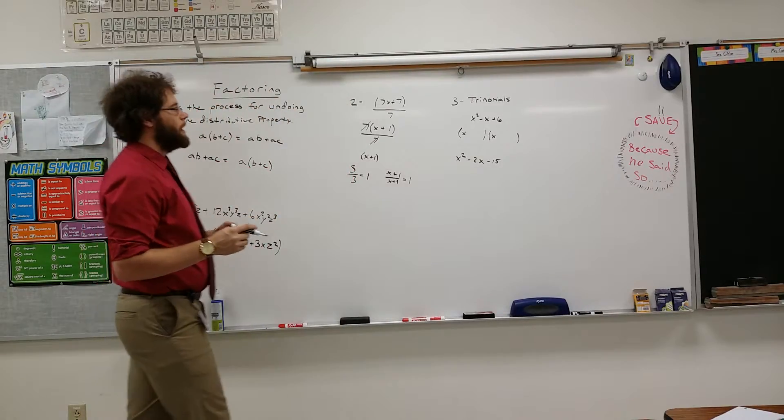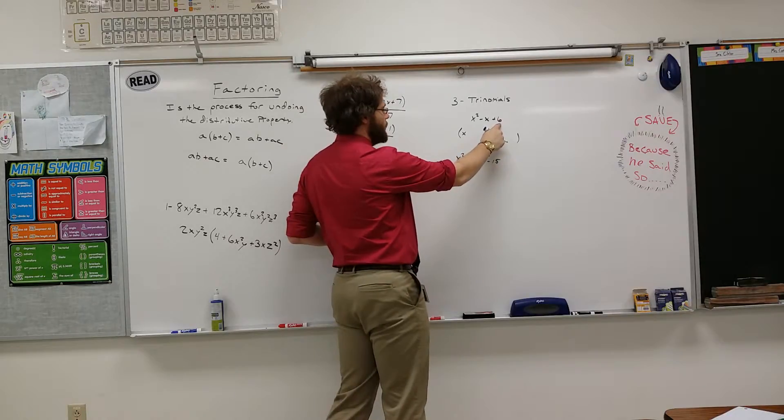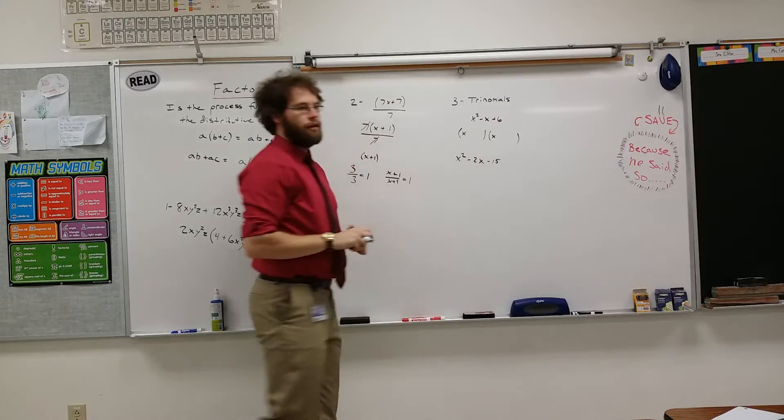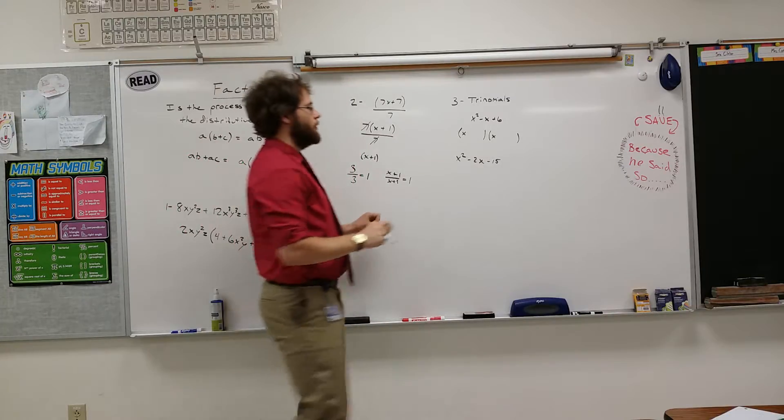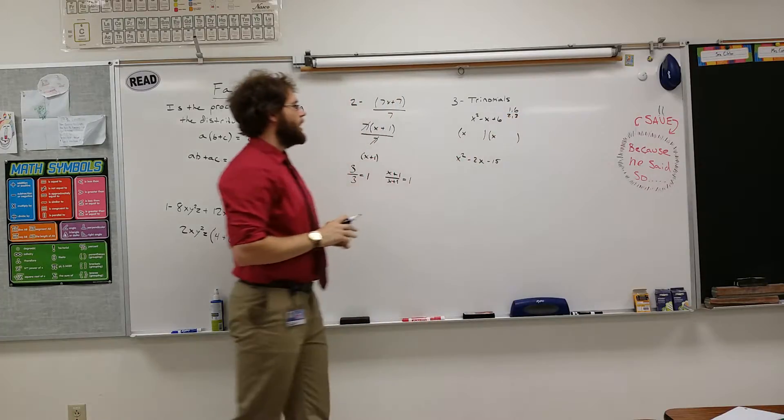After that, you need to find factors of this back number that, when added or subtracted, equal the number in front of the middle number. So, the factors of 6 are 1 and 6 and 2 and 3.